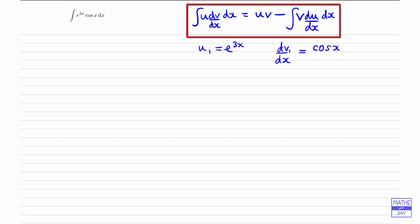So now we're ready to work out du1 by dx, and the other thing we'll need is v1. And then when we've got those two things, we'll be able to apply the formula. So to work out du1 by dx, we just look at u1, so it's e to the 3x, so we're differentiating, and that will give us 3e to the 3x. And working out v1 from the derivative of v1, we just integrate. So integrating cosx, and that will give us sinx. And now we're ready to use the formula.